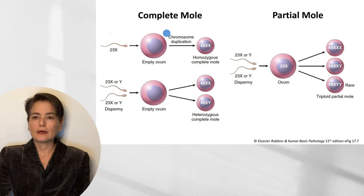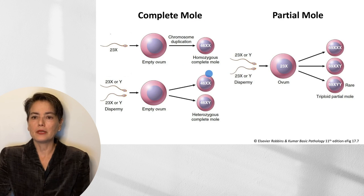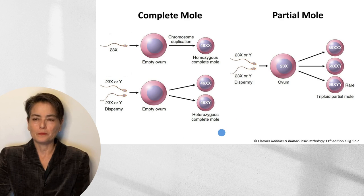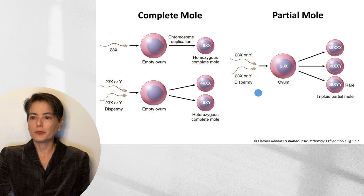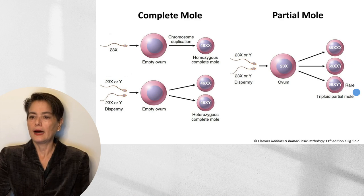Looking at a figure showing the pathogenesis more clearly: in a complete mole, you have an empty ovum that can either be fertilized by a single sperm that then duplicates to form a homozygous complete mole, or undergo dispermy into an empty ovum to yield a heterozygous complete mole. For partial moles, we maintain the genetic complement from the haploid ovum, but also have dispermy leading to a triploid mole — XXX, XXY, or more rarely XYY.